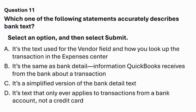Which one of the following statements accurately describes bank text? Select an option and then select Submit. A: It's the text used for the vendor field and how you look up the transaction in the expenses center. B: It's the same as bank detail information QuickBooks receives from the bank about a transaction. C: It's a simplified version of the bank detail text. D: It's text that only ever applies to transactions from a bank account, not a credit card. The answer is B: it's the same as bank detail information QuickBooks receives from the bank about a transaction.